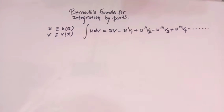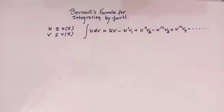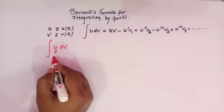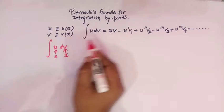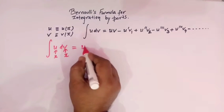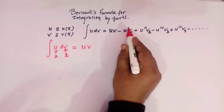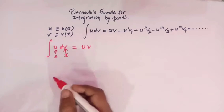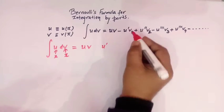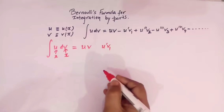So let us see how to write this formula without memorizing it. So what we will do — we will write u·dv, where u is a function of x and v is also a function of x. Now in order to reproduce this formula, first we will write the product of u and v, that is u·v. Then here we have u prime, which is the derivative of u with respect to x. We will write u' and v1, where v1 is the integration of v.